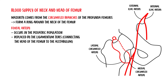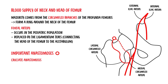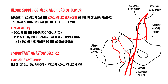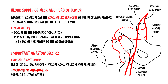There are two important anastomoses that provide collateral blood flow to support the femoral head. One is the cruciate anastomosis, between the inferior gluteal artery and the medial circumflex femoral artery. The other is the trochanteric anastomosis, between the superior gluteal artery and the medial and lateral circumflex femoral arteries.